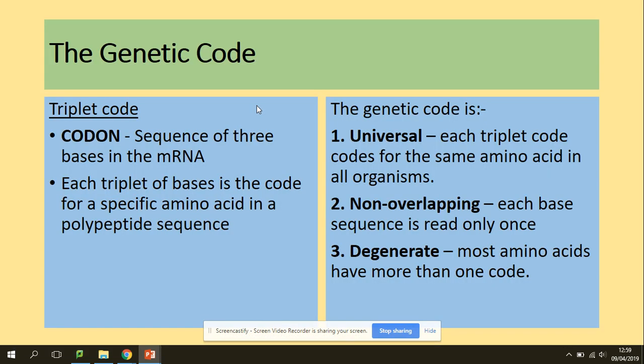So genetic code. Genetic code is a triplet code. That means we've got three sequences of nucleotides. So what is a codon? It's a sequence of three bases, three nucleotides in the mRNA. And each of those triplets of bases is the code for a specific amino acid in a polypeptide sequence. Remember, your codon table is based on the sequence of codons on mRNA.